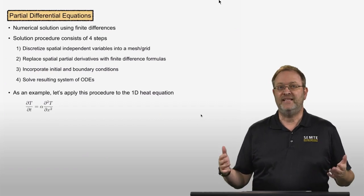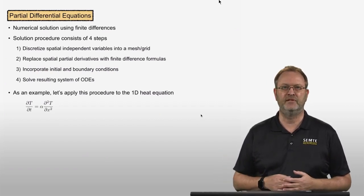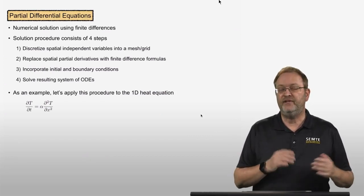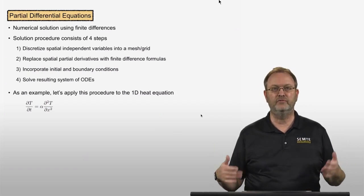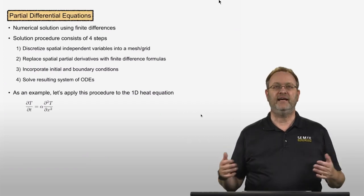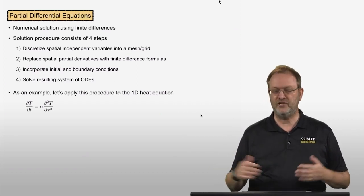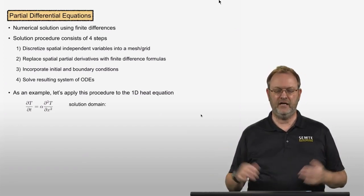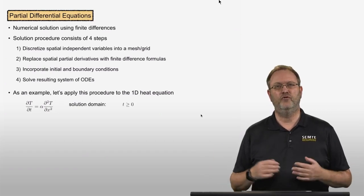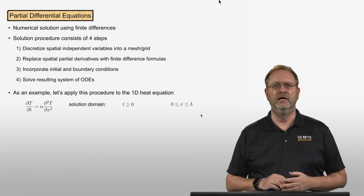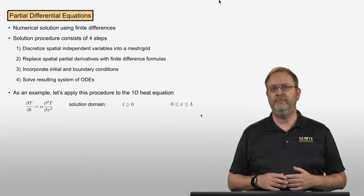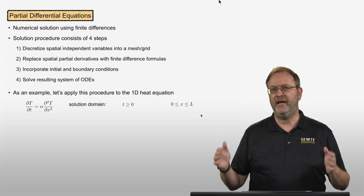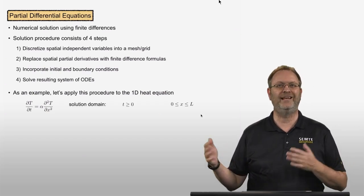I'm going to use an example to explain these four steps, and the example will be the one-dimensional heat equation, where the derivative of temperature with respect to time equals alpha times the second derivative of temperature with respect to the spatial dimension x. When solving this PDE, we need a solution domain: time greater than or equal to zero, and a spatial domain from zero to some length uppercase L.